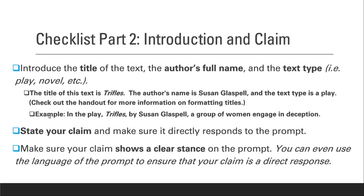The way that your introduction would sound for this piece of writing would be something like: 'In the play, Trifles, by Susan Glassbell, a group of women engage in deception.' Here is our introductory sentence — it tells us everything we need to know about the piece of writing. Here is the text type: it's a play. Here is the title of the text formatted correctly in MLA — it's italicized with the first letter capitalized, no quotation marks. Here's the author's name and a little bit about the work. That's all we need.